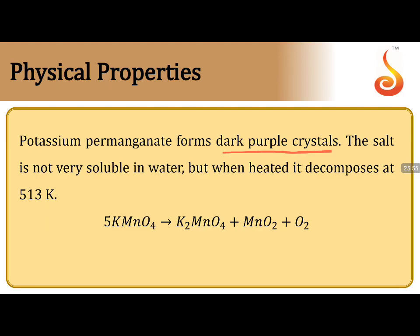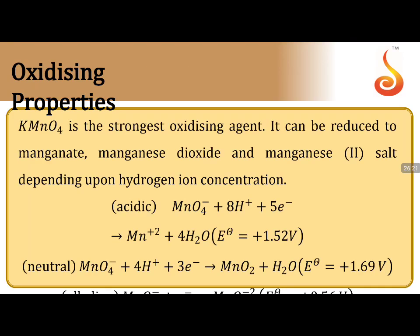Laboratory method of preparation of KMnO₄: Mn²⁺ salts are oxidized by peroxodisulfate (persulfate), forming MnO₄⁻ while peroxodisulfate is reduced to SO₄²⁻. Physical properties: KMnO₄ forms dark purple crystals, not very soluble in water. When heated, it decomposes at 513 K: 2KMnO₄ → K₂MnO₄ + MnO₂ + O₂. This equation is frequently asked stoichiometrically.